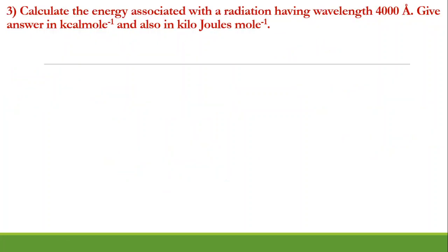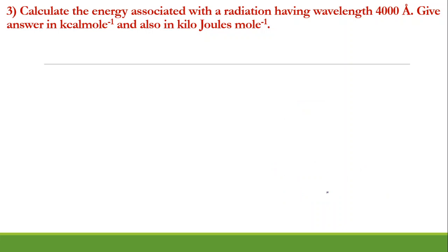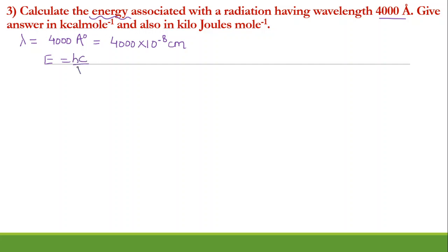Now we will solve the third type of question. You have to calculate the energy associated with the radiation. The wavelength given is 4000 Angstrom, which I will convert into centimeter to make calculations easier. Your aim is to find energy. Energy is equal to hc by lambda, wherein h is Planck's constant. Its value is 6.6 into 10 to the power minus 27 erg second, or equivalently 6.6 into 10 to the power minus 34 joule second.